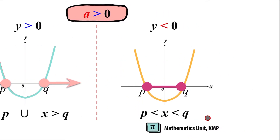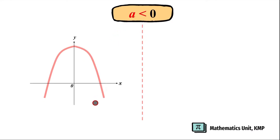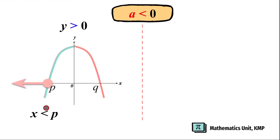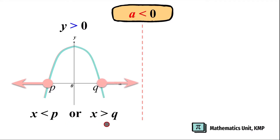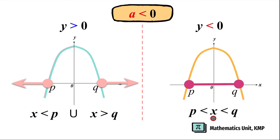But what if our a is negative? Then we're going to have a sad graph. If y is positive, then the solution is going to be x is less than p or x is greater than q. If y is negative, then the solution is going to be in the middle, where x is greater than p and x is less than q.